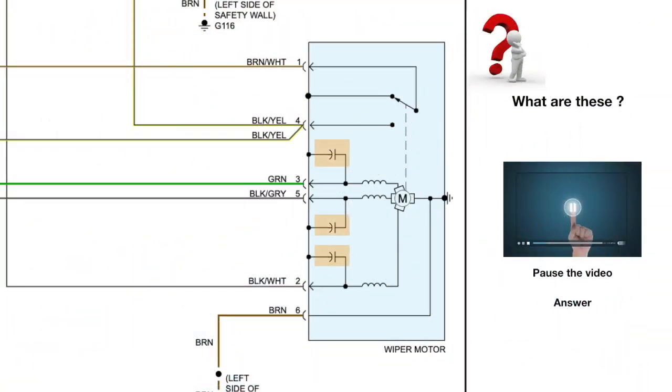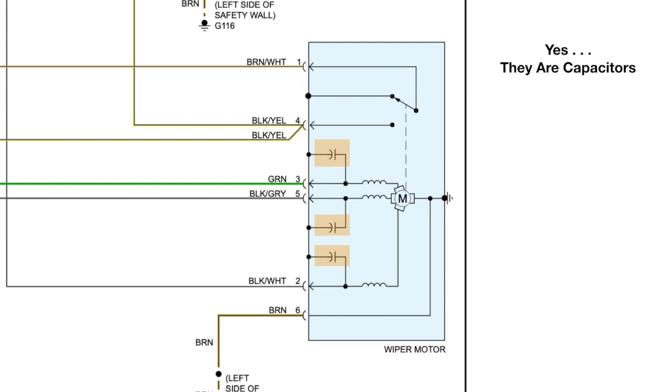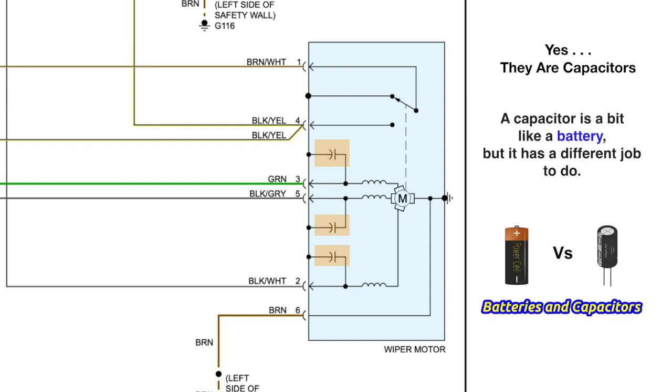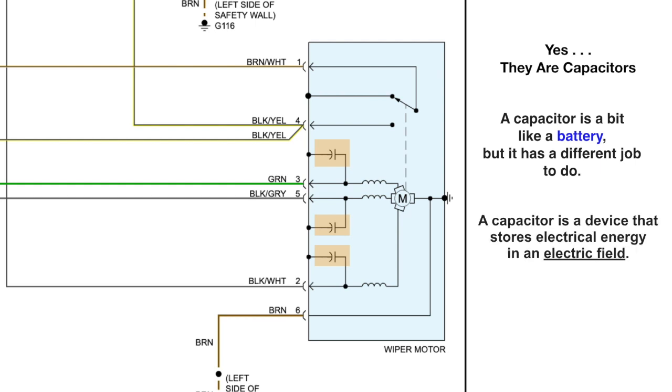Remember, this is where we left off. I asked you what they are - yes, they're capacitors. A capacitor is a bit like a battery but it has a different job to do. A capacitor is a device that stores electrical energy in an electric field.